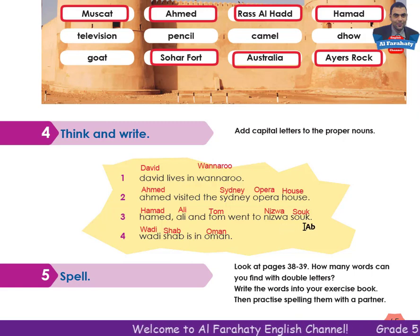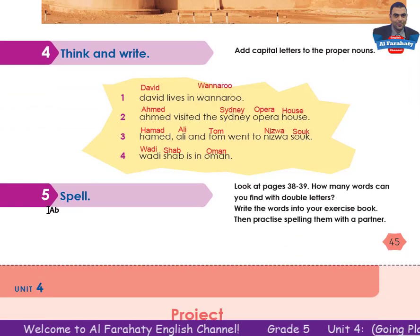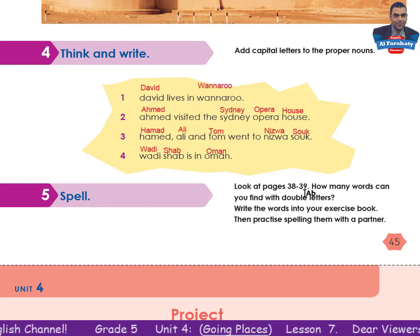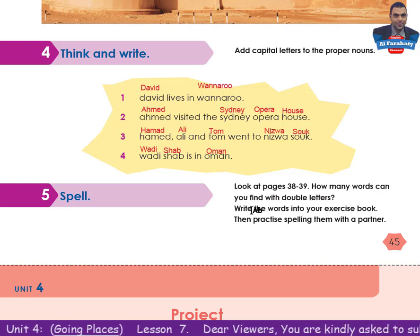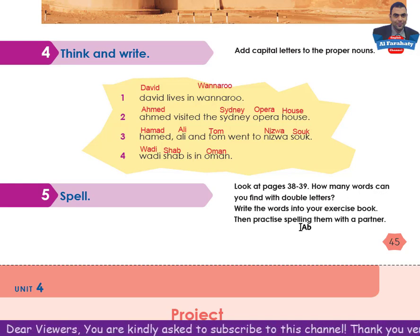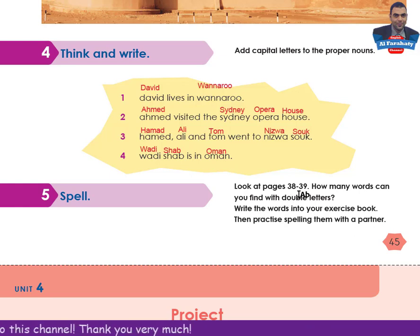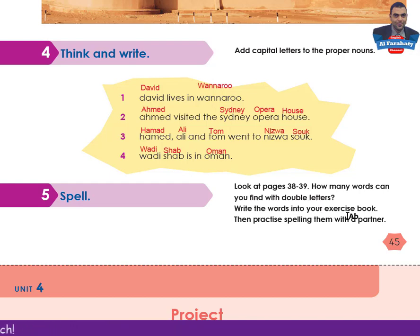Nizwa Souk. Activity 5: spell. Look at pages 38 and 39 — how many words can you find with double letters? Write the words into your exercise book, then practice spelling them with a partner. Try to find the words with double letters, write them in your exercise book, and practice spelling them with a partner.